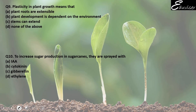Question number 9: Plasticity in plant growth means that — plasticity, if we think about it, means lack of flexibility. In plant growth, plasticity means the plant cannot function on its own terms; it is completely dependent on the environment. If there is no light or no water, the plant cannot bring those things on its own — we have to provide them. So B is the correct answer: plant development is dependent on environment.